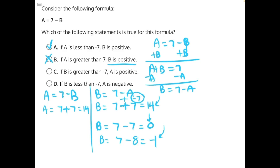If B is greater than negative 7, A is positive. If we're going greater than negative 7, all positive numbers are greater than negative numbers. So there's an opportunity for us to have 7 minus a positive 8. That's a greater number than negative 7, but that would give us negative 1 as a result. And A would no longer be positive. Therefore, C is incorrect.